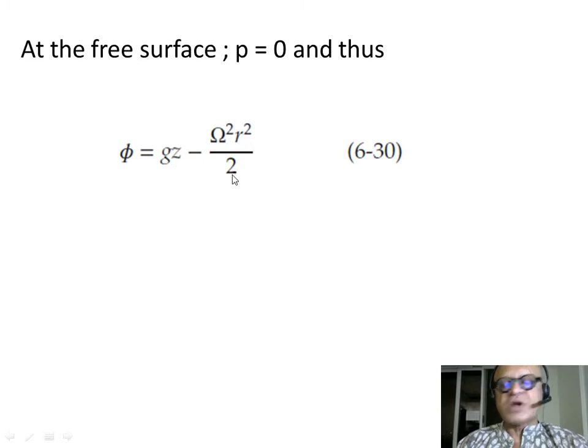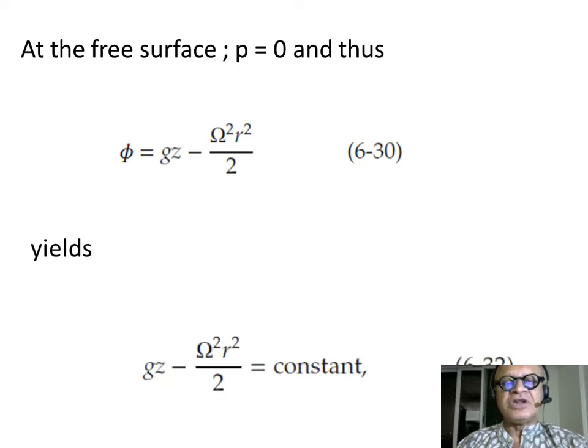phi that we saw before for the modified gravitational potential of the system we were deriving was gz minus omega squared r squared over 2. We had combined gravity and centrifugal force. So, in our case, then, it means gz minus omega squared r squared over 2 equals constant at the surface.